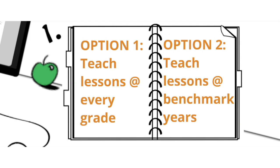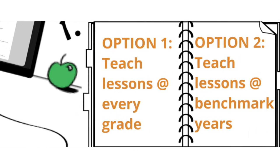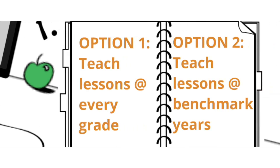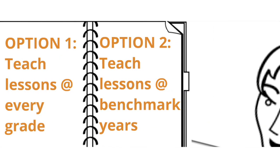We recommend one of two options to be sure students are digitally savvy by the time they leave school. The first is to teach one or two lessons per grade level so each student learns some aspect of digital literacy and citizenship every year. The second is to choose benchmark years in elementary, middle, and high school so that students receive all of the lessons recommended for those grades and learn about all of the topics required by CIPA.